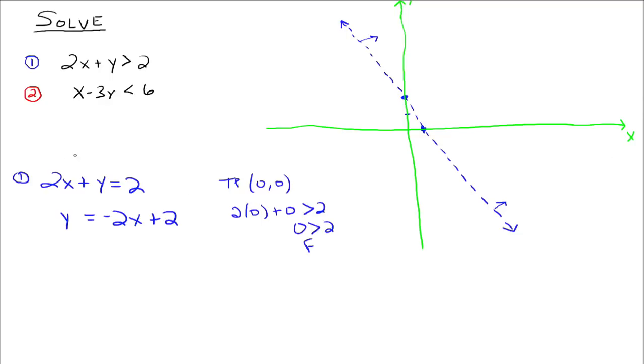Now instead of just shading the entire side like we did before, I'm just going to make a note, we need to shade in this direction. What we're going to do now is take the second inequality, graph it on the same axis, and figure out which side we need to shade on, and then the solution to the entire system is where those two shaded areas overlap.